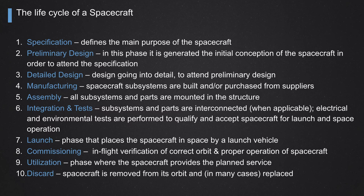Finishing the detailed design, we start manufacturing, because all the design is ready. We build all the subsystems and equipment that will constitute the spacecraft. All the shops prepare and build every single part of the spacecraft - boxes, tubing, pipelines - and put them together in this manufacturing phase.